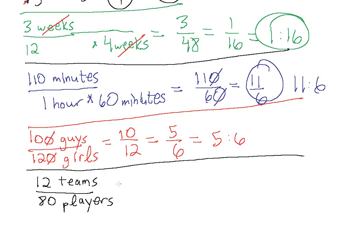We want to know how many teams per player. So once again, this is actually a qualitative unit. So we simplify the fraction. 12 over 80, if we factor out a 4 out of the top and the bottom, will become 3 over 20. The ratio of teams to players is 3 to 20. There's 3 teams for every 20 players. Let's squeeze in one more.